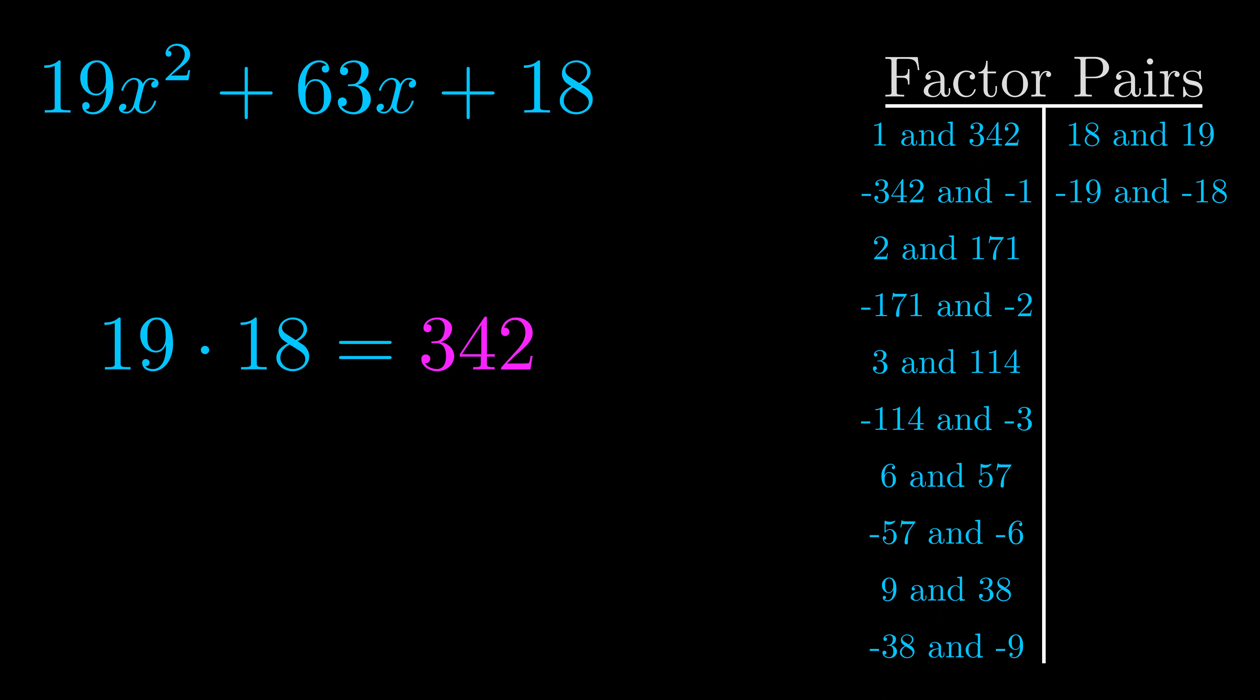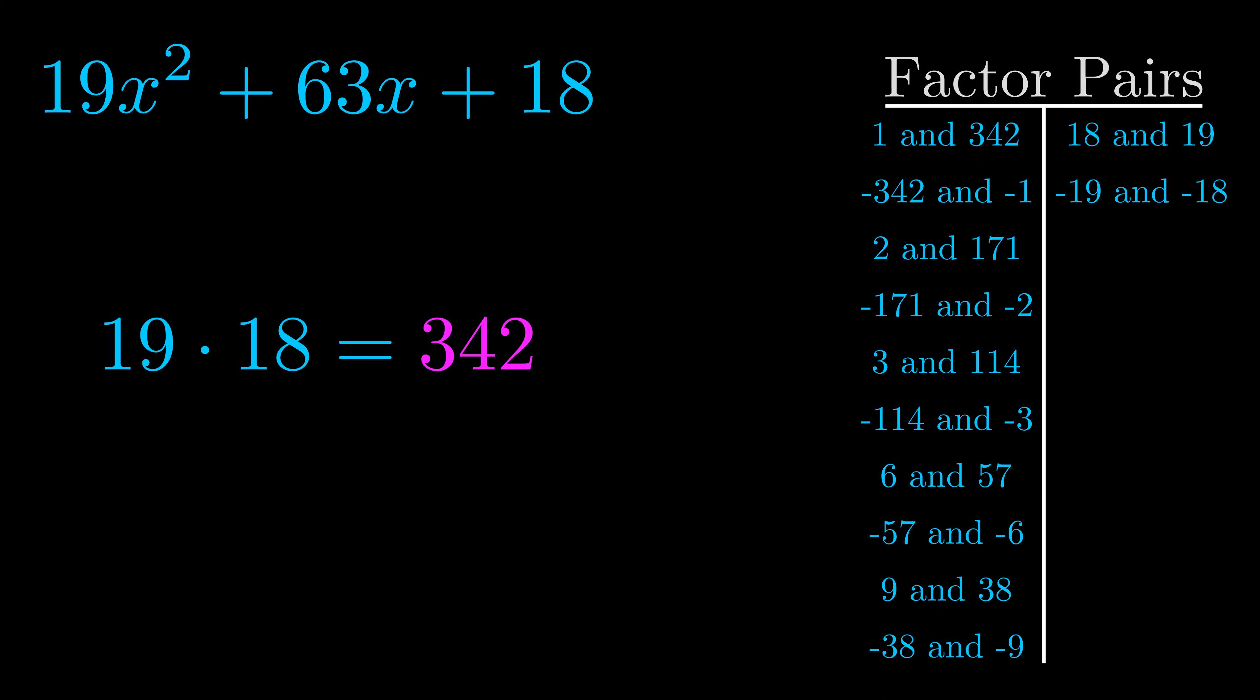Now once you have these factor pairs the goal is to find which of these pairs adds to the b value. The b value is the coefficient on the x term. That's the middle term, the one that we haven't done anything with yet.